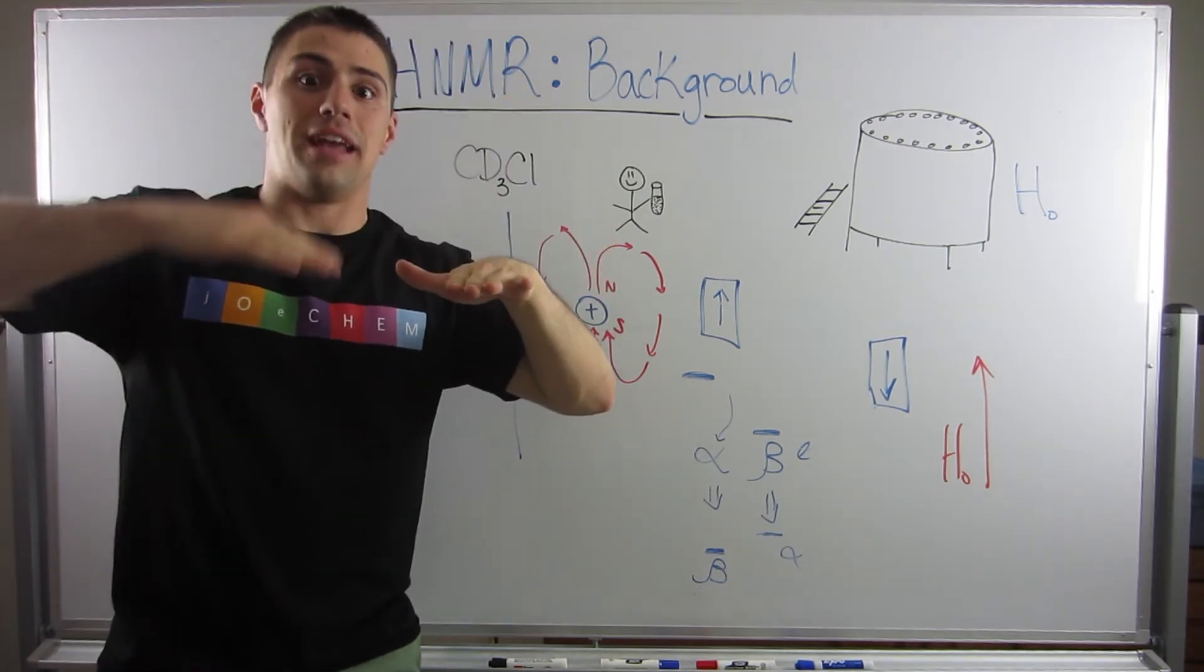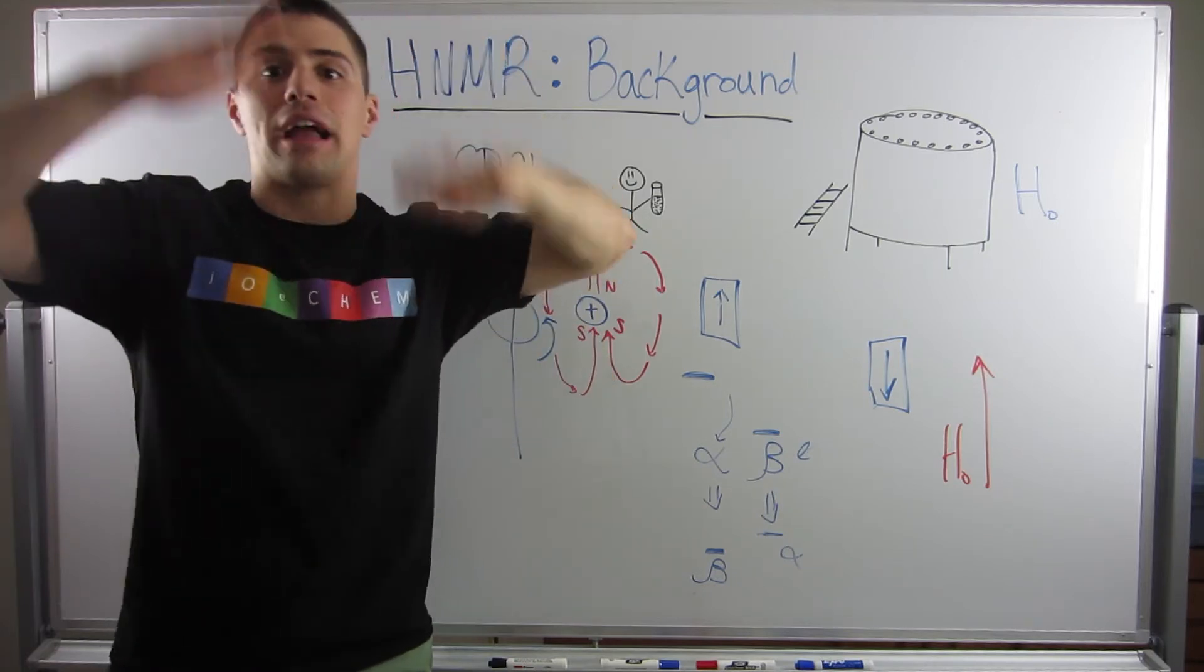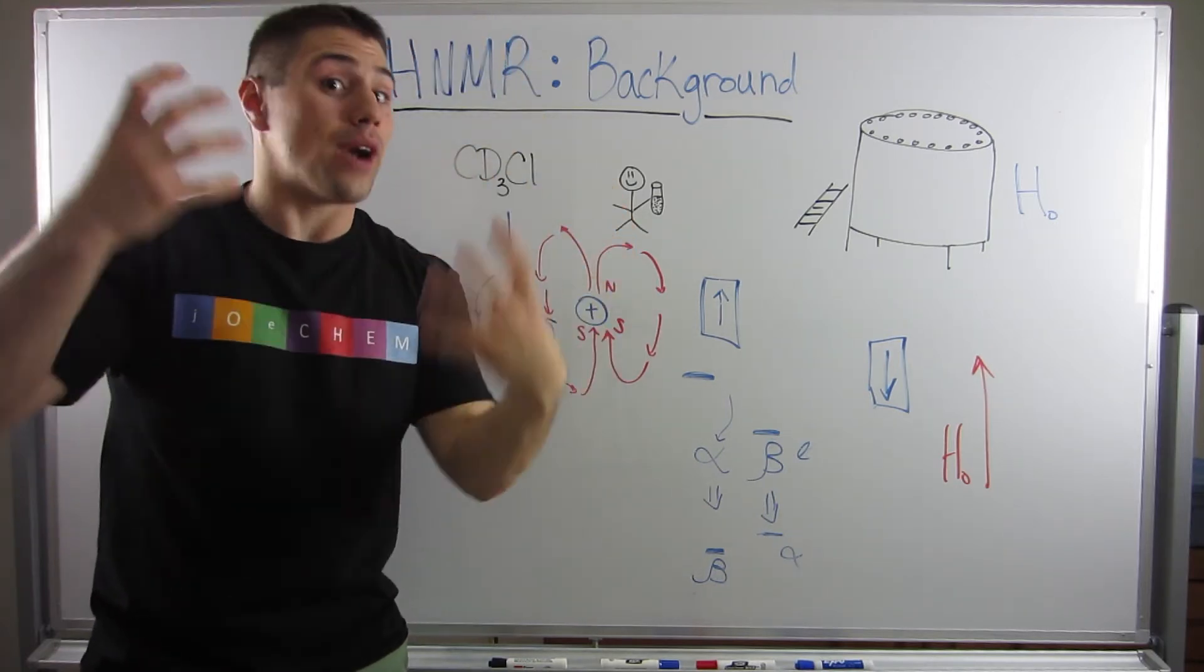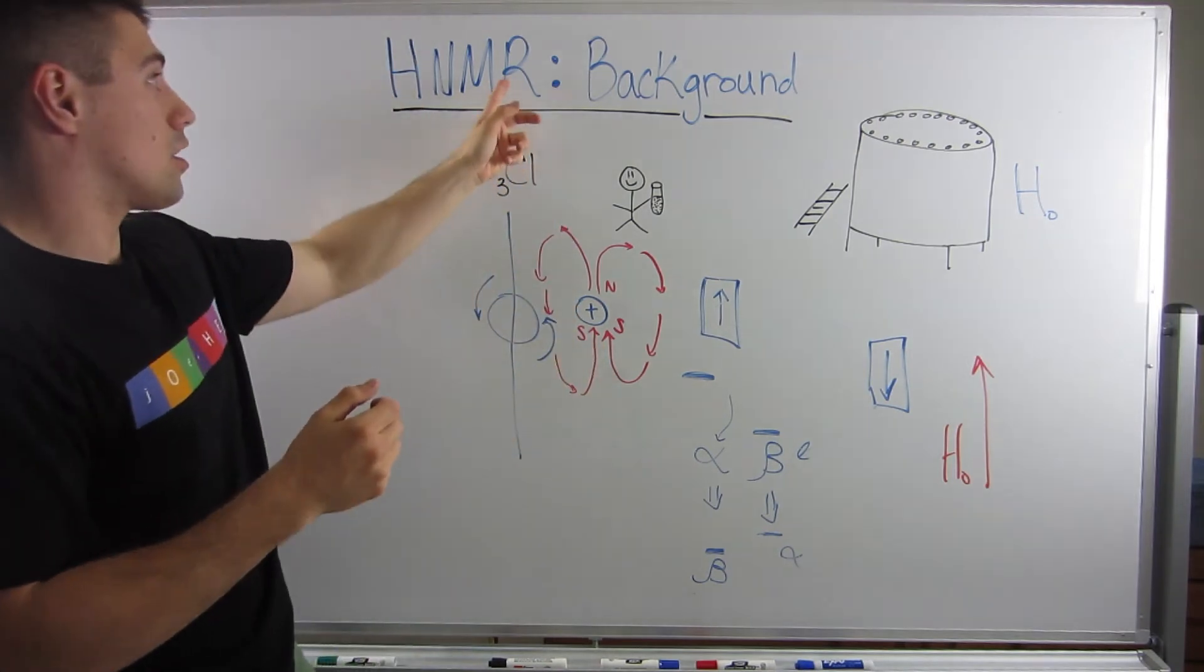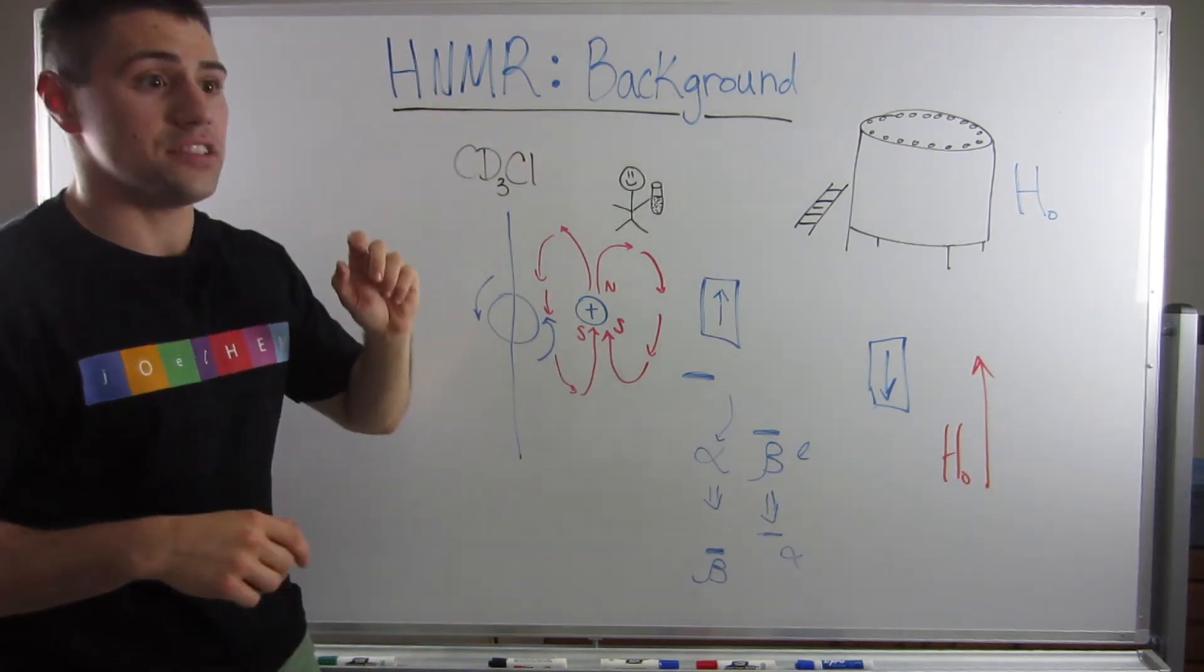So it's a constant back and forth, back and forth, back and forth. So in that type of resonance, which is what the R stands for, nuclear magnetic resonance.